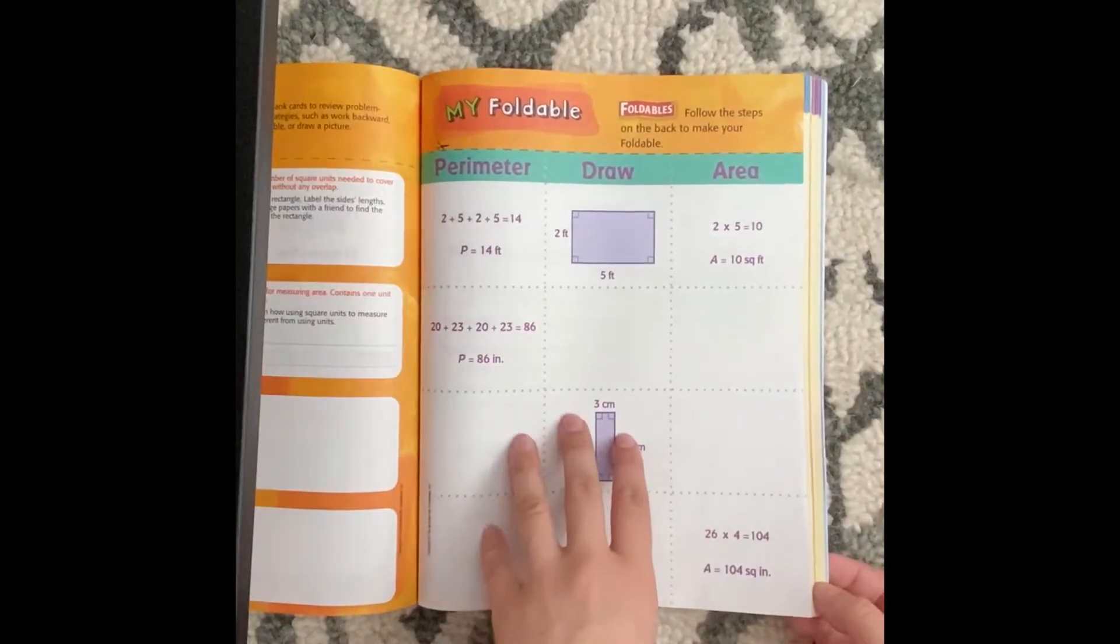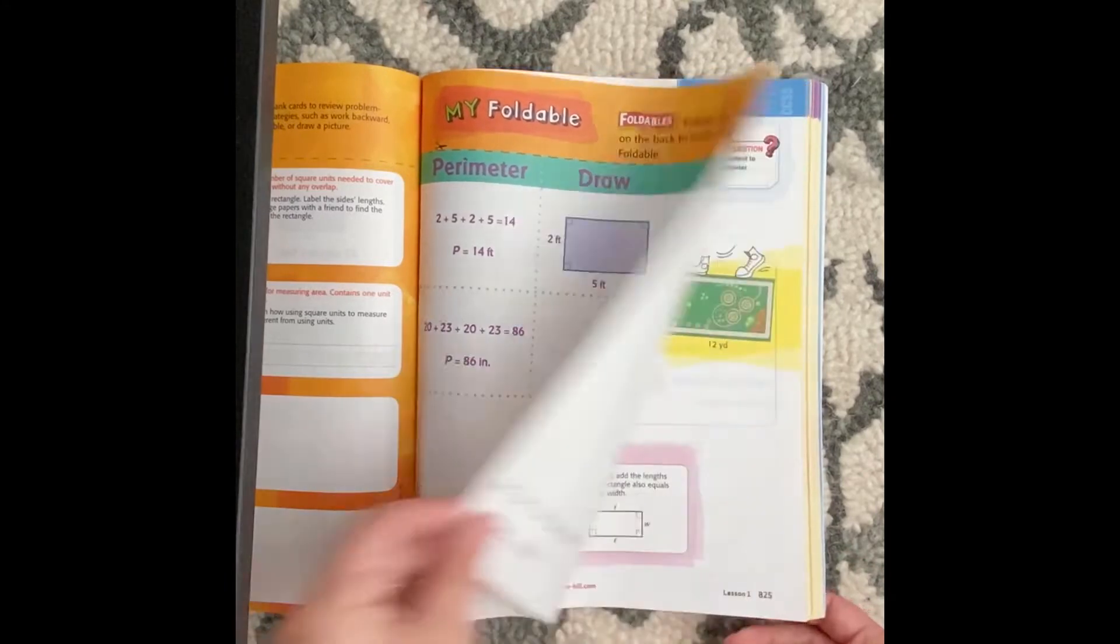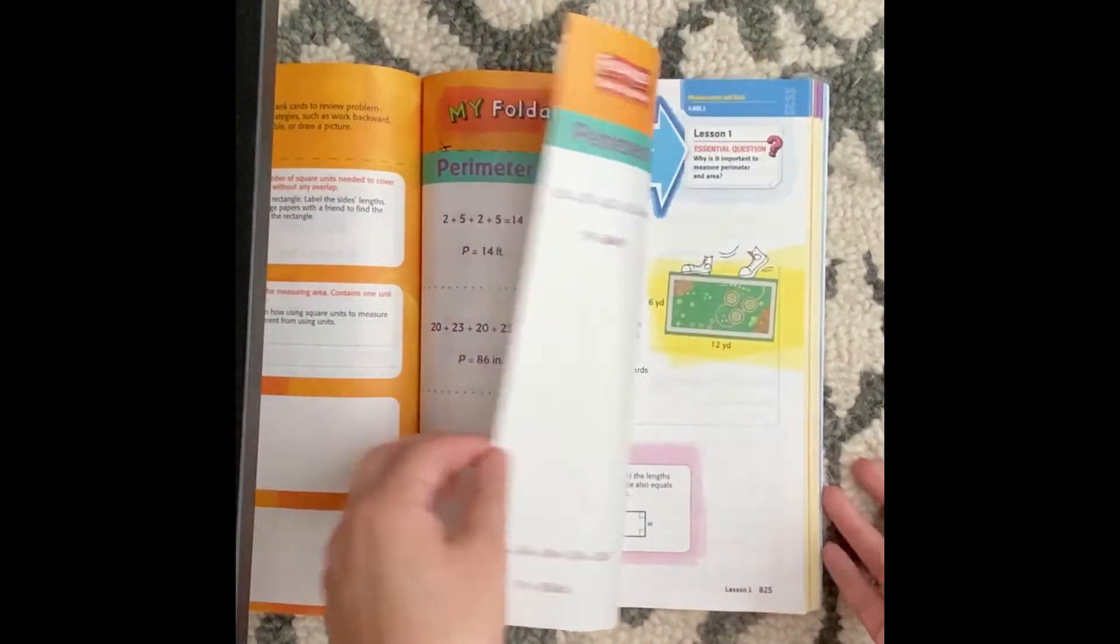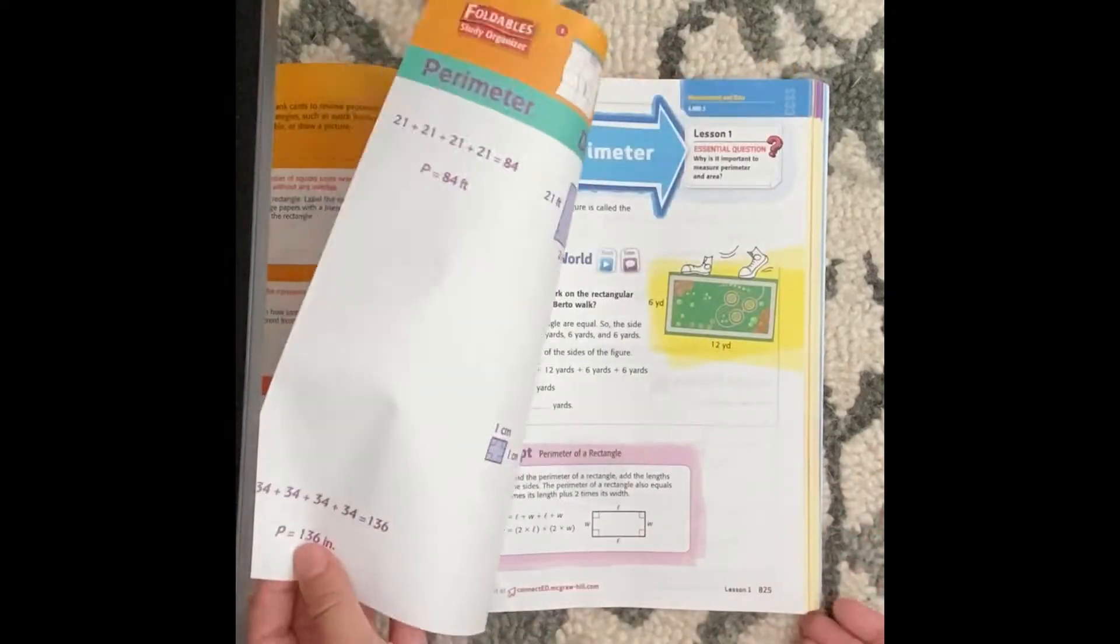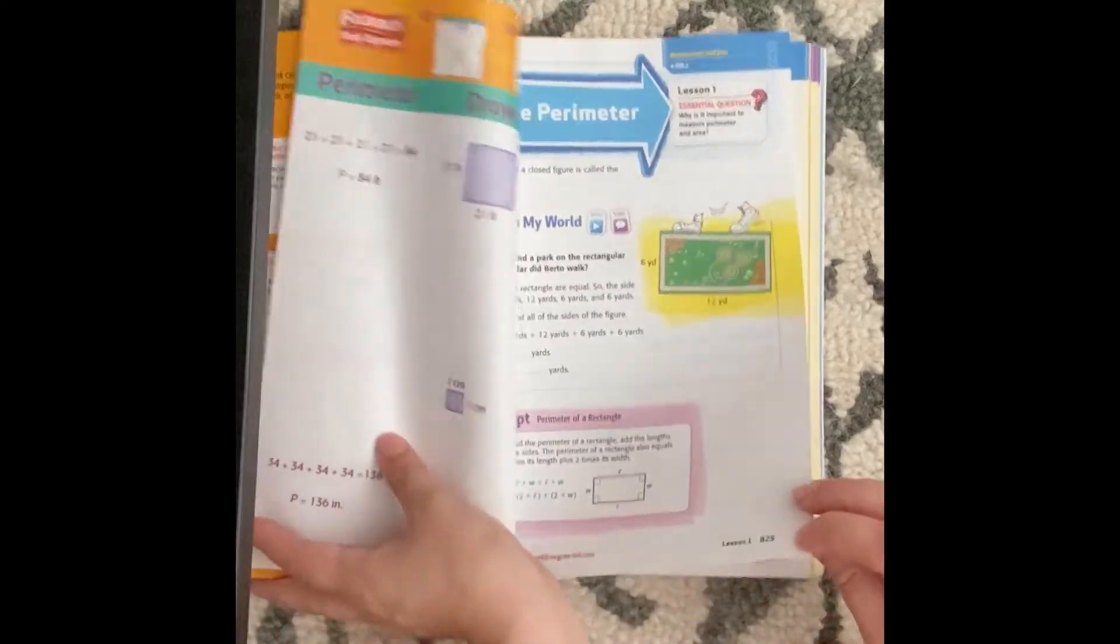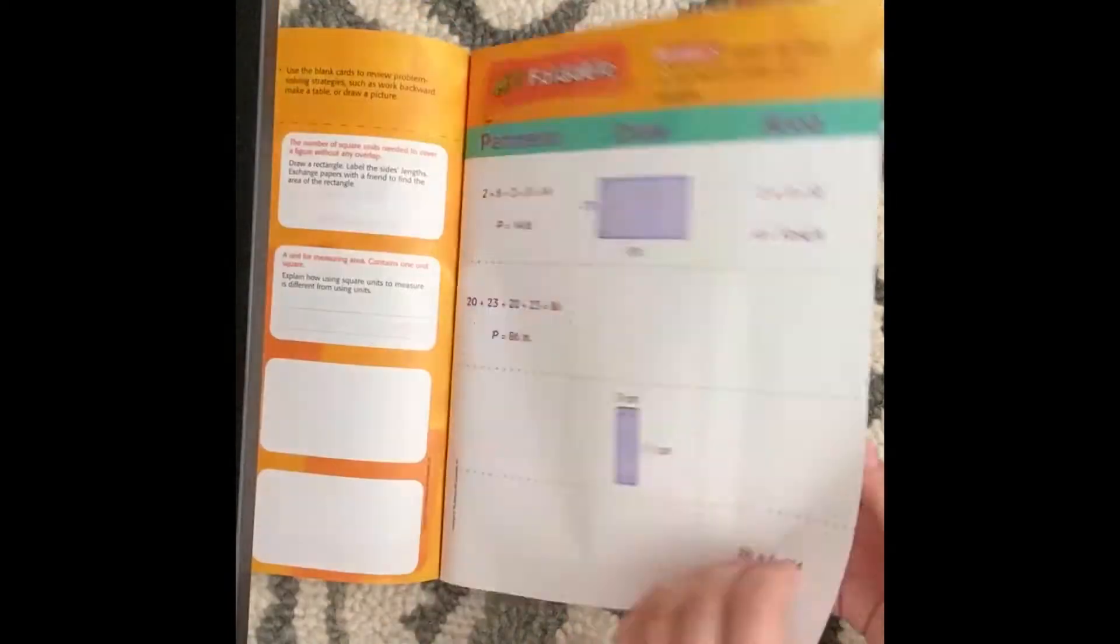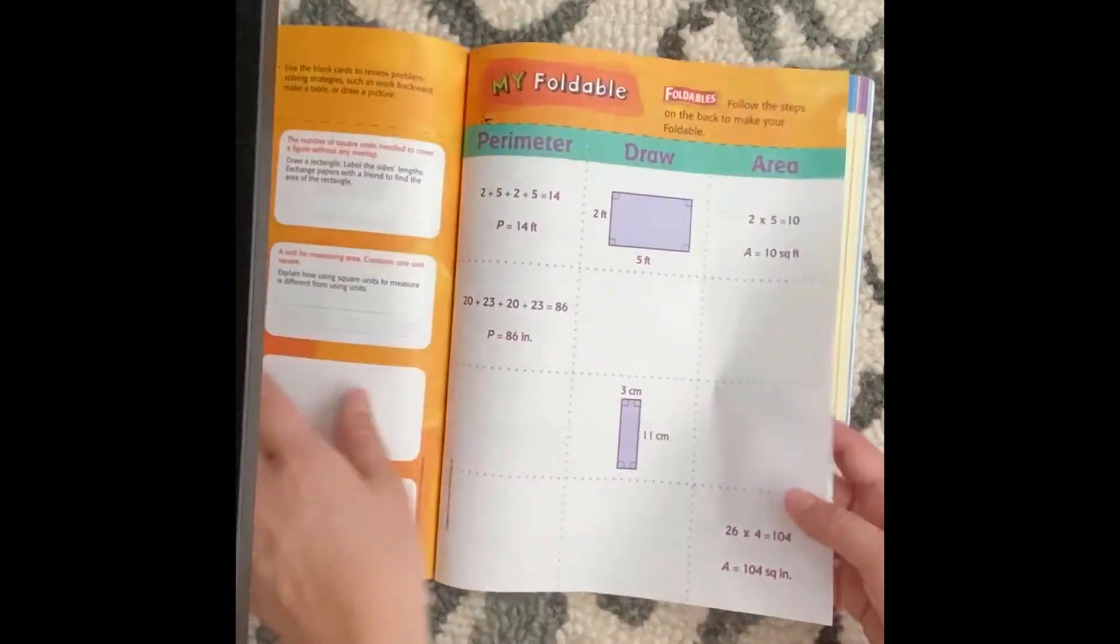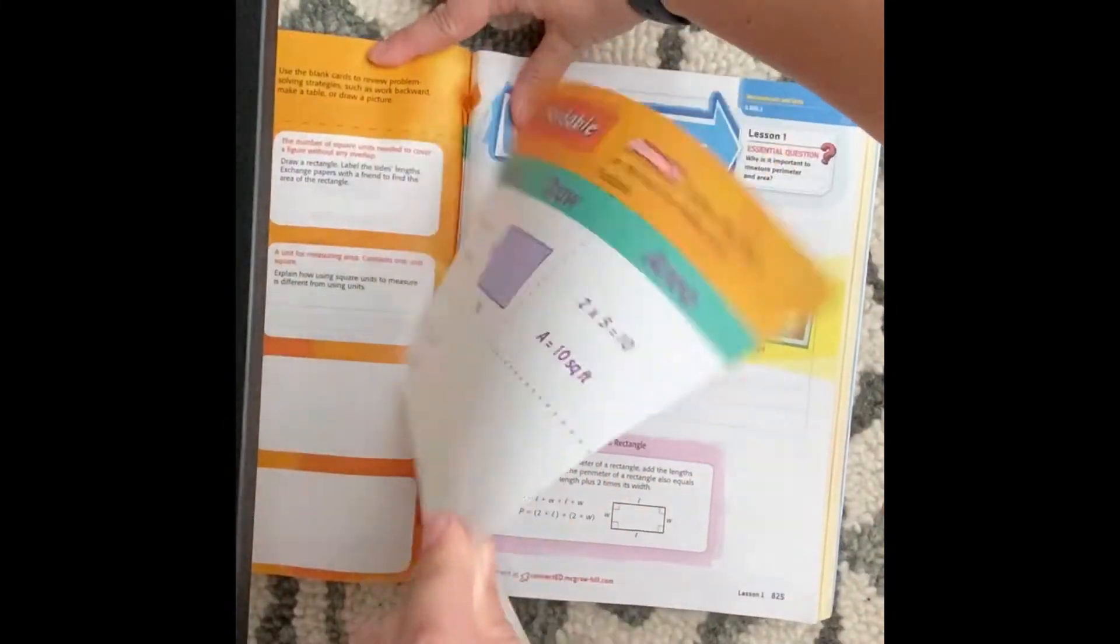Hey fourth grade, today is Monday April 20th and I'm going to show you how to create the foldable. It doesn't really have a page because you know we have page 825, but the foldables never really have page numbers on them so do the best that you can.